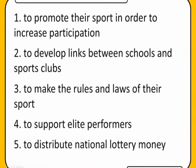The last role is that Governing Bodies are given a certain amount of money from the National Lottery, and their responsibility is to distribute that accordingly amongst their sport. Using England Netball as an example, they will be given a certain amount of National Lottery money and then decide where that money goes — whether to a particular club, for new facilities, for coaching, or whatever it happens to be.